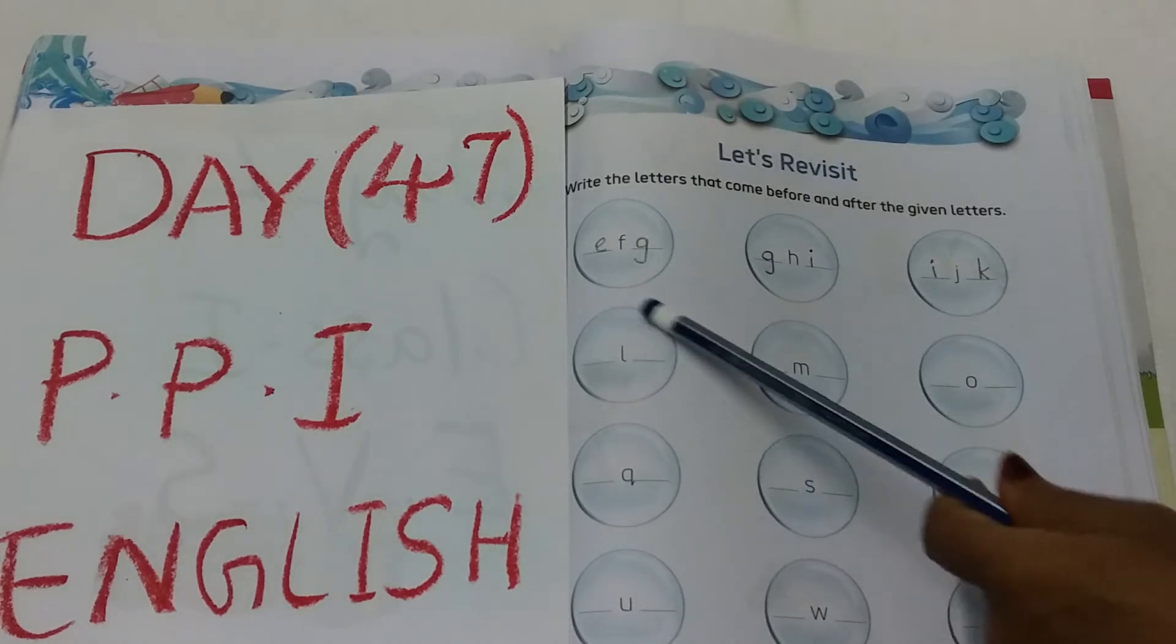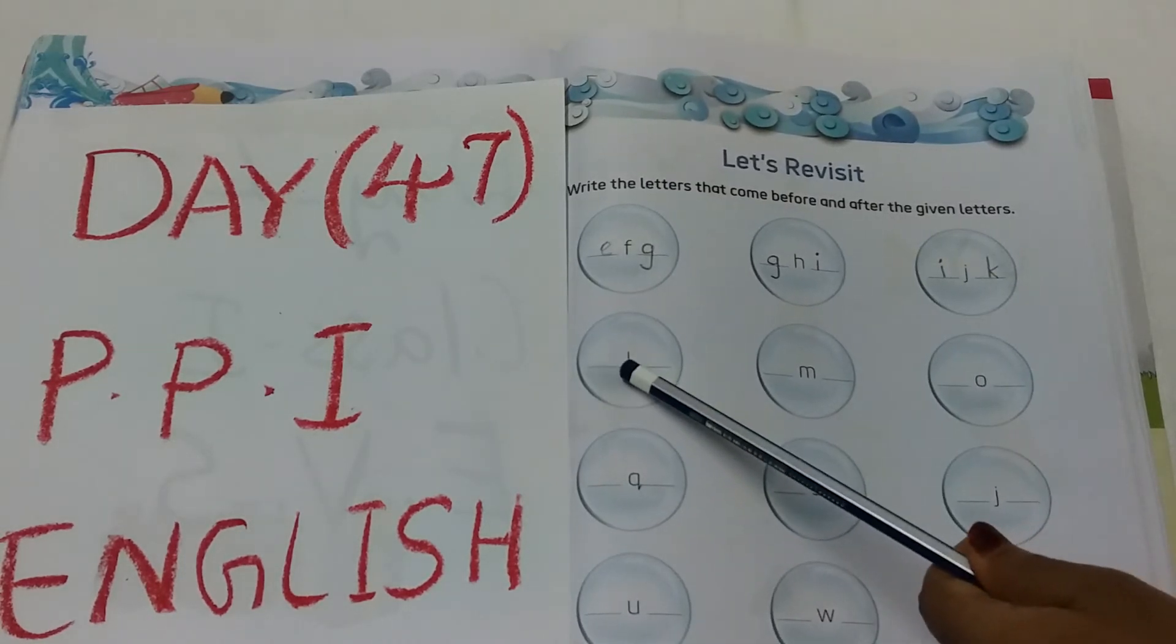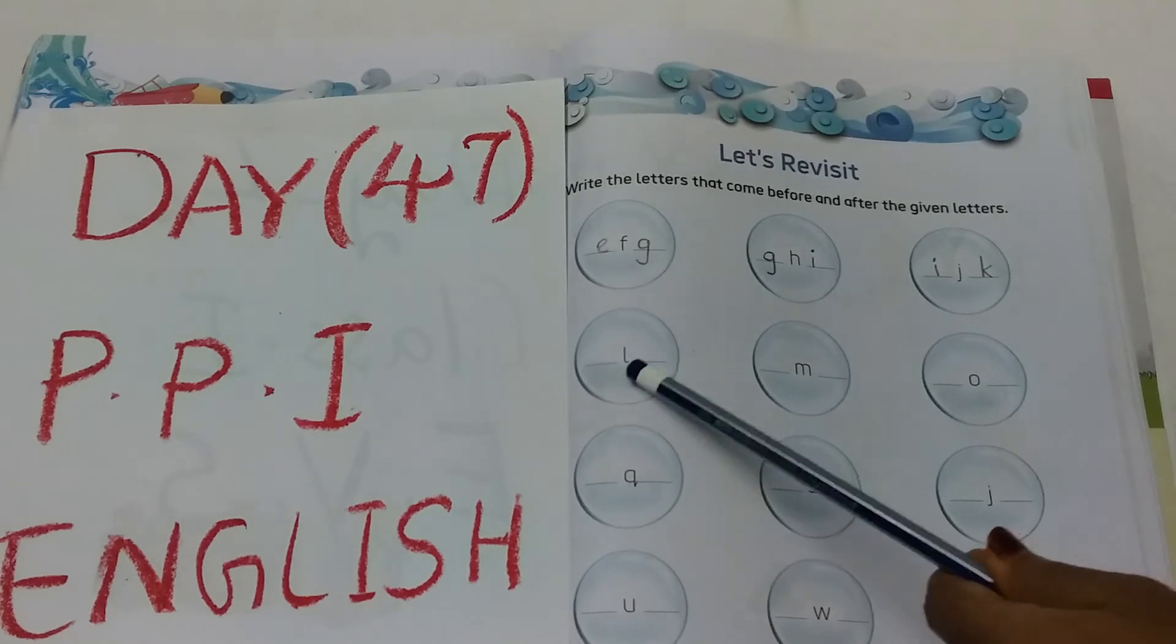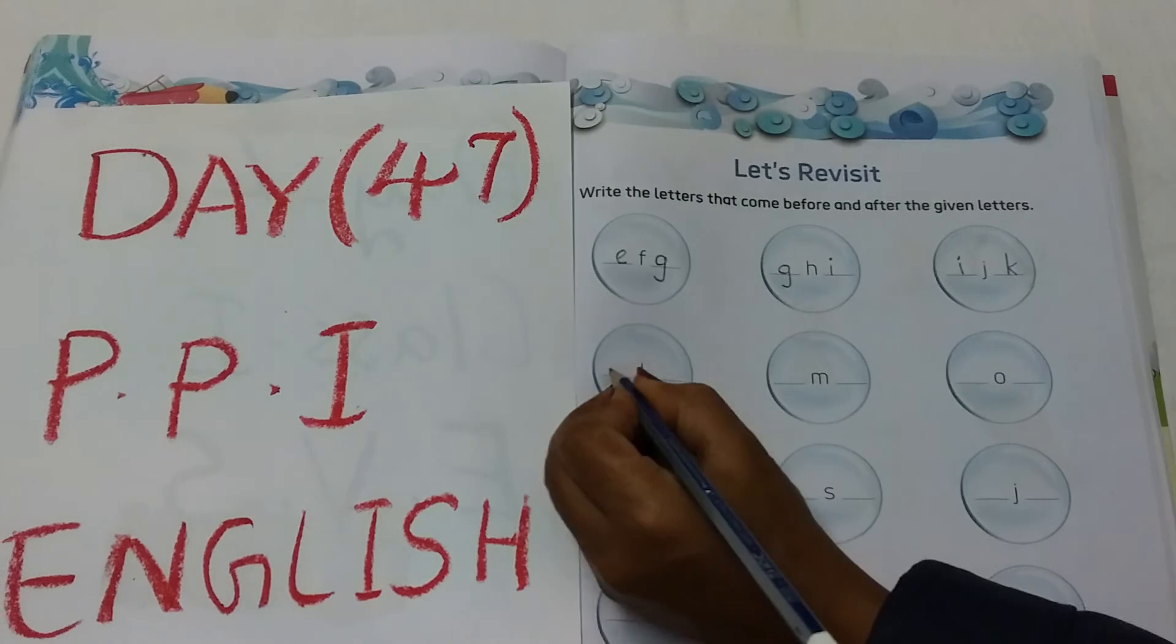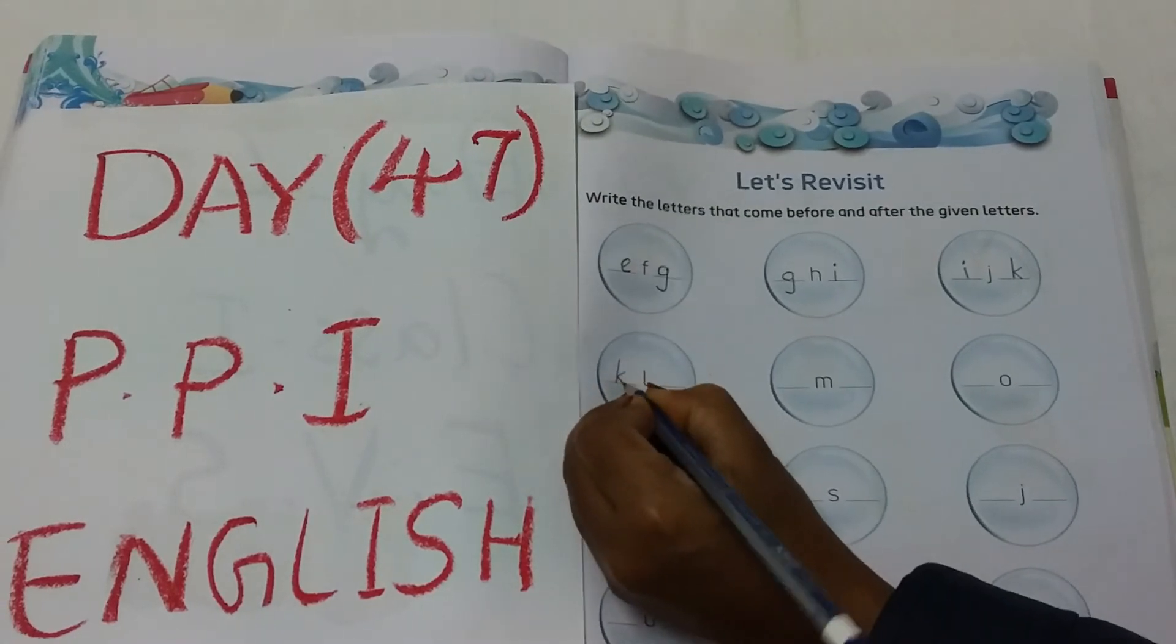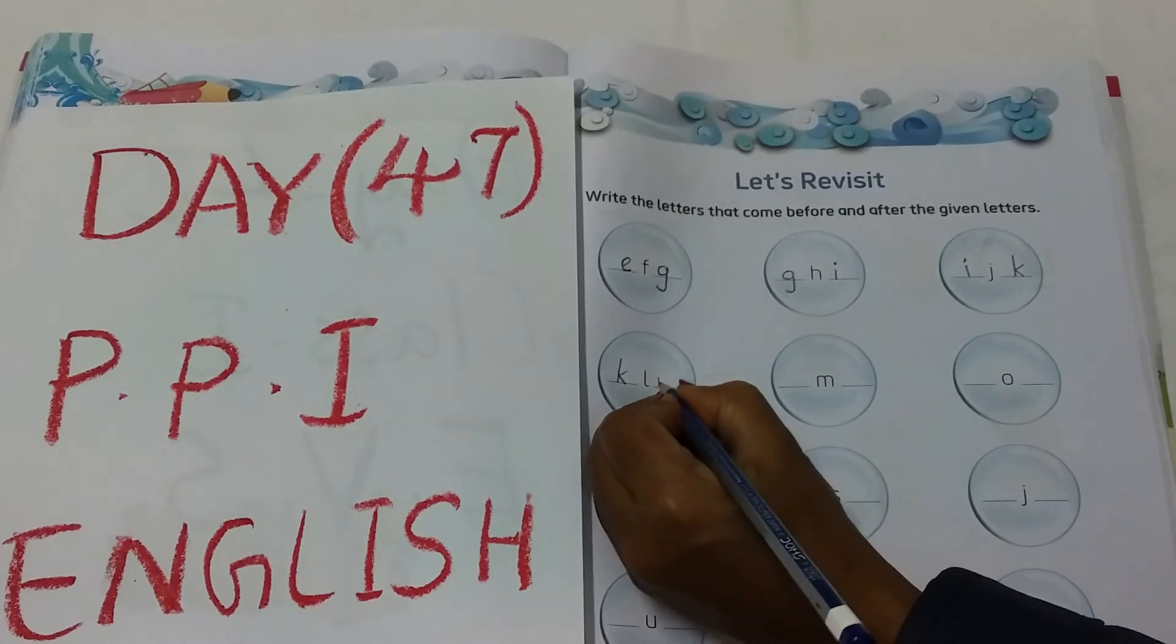What is this? Next circle, children. Letter L. After L, M. But before L, K. K, L, M.